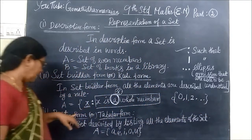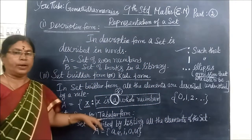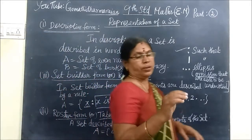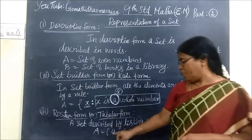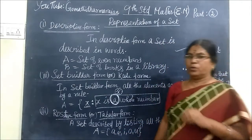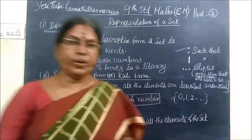And the last one is roster form, the tabular form. In roster form, we are writing the elements separately. We are separating the elements by putting commas: A, E, I, O, U. So roster form is very easy.